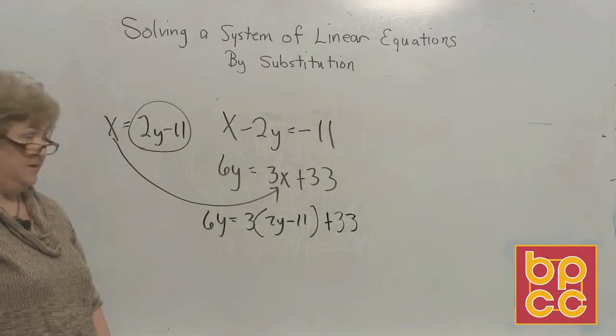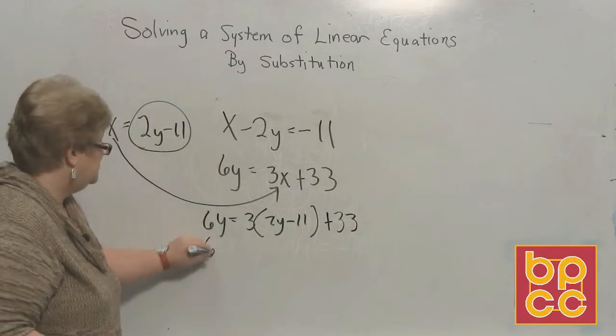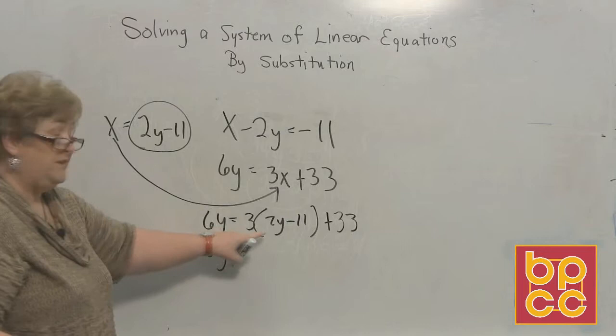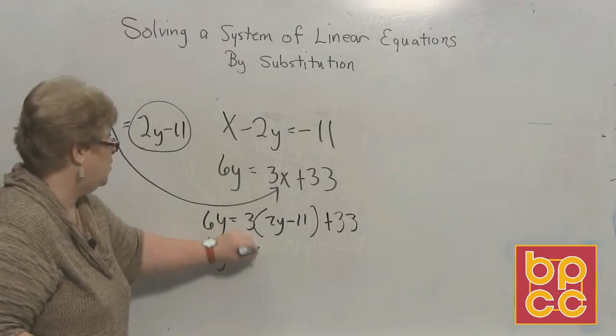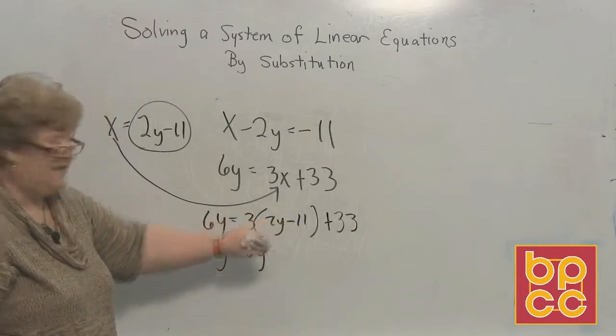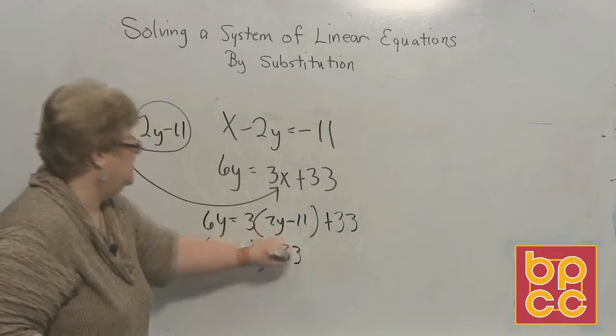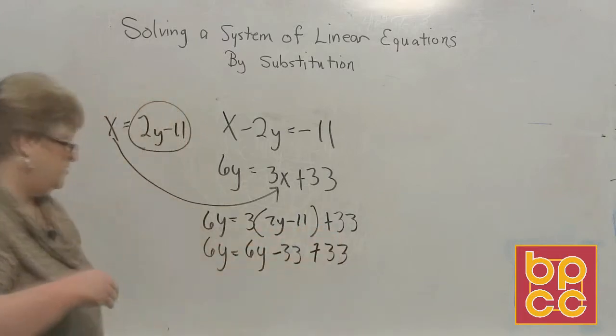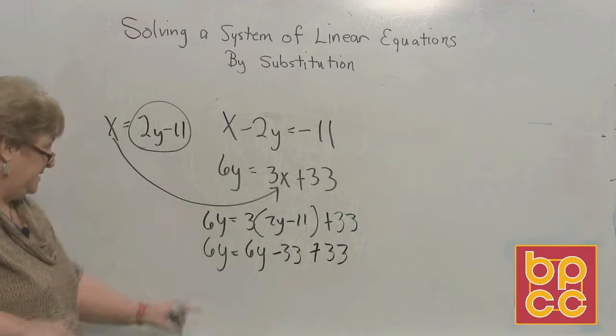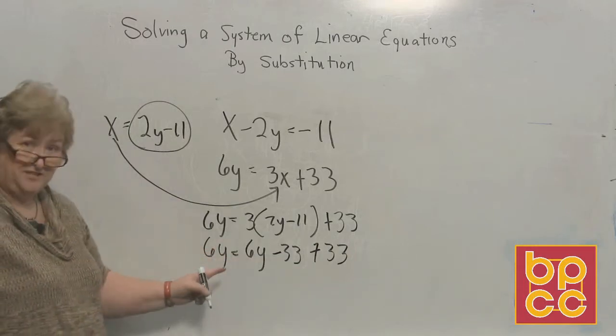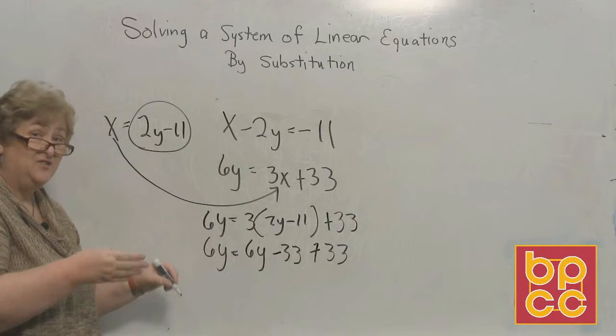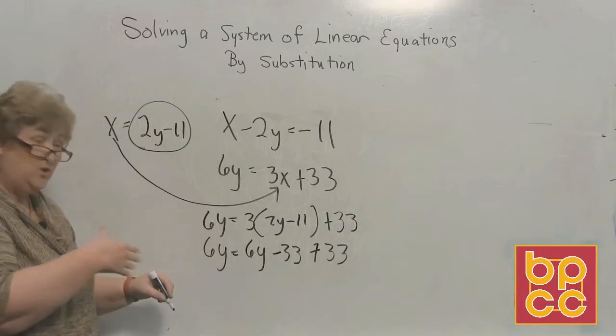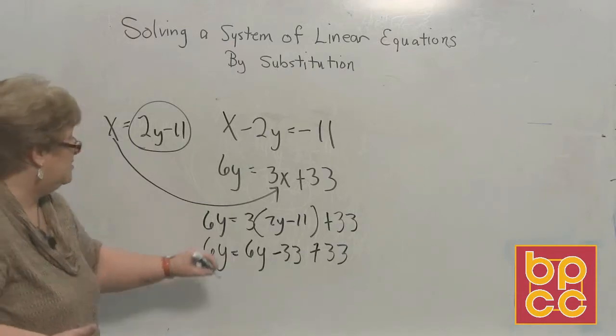I'm going to say 6y equal 3 times 2y minus 11 plus 33. Time to distribute, at least on one side. 6y equal 3 times 2 is 6y. 3 times a negative 11 is a negative 33 plus 33. It's important to see where the equal sign is. Our y's are on opposite sides. Opposite sides, the very same number. No matter which way you go, they're going to clear out. So, those clear.